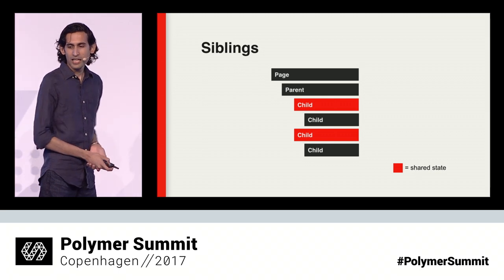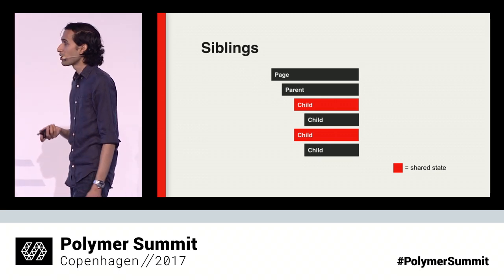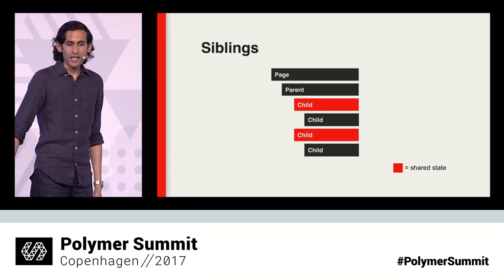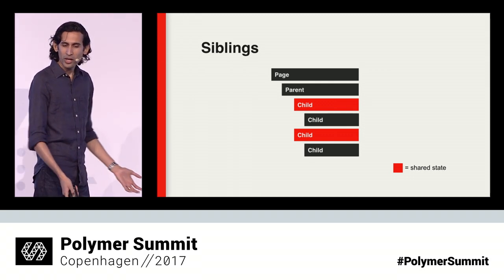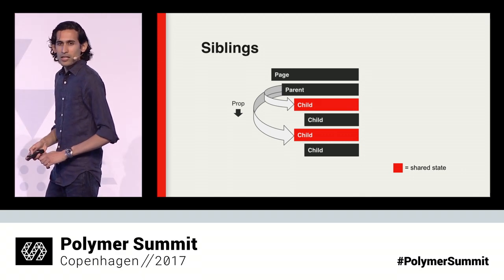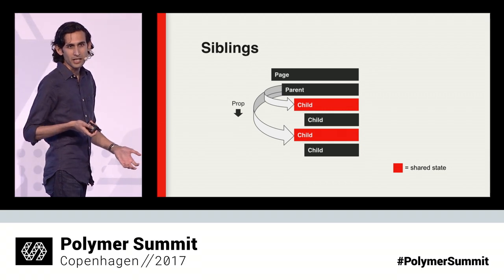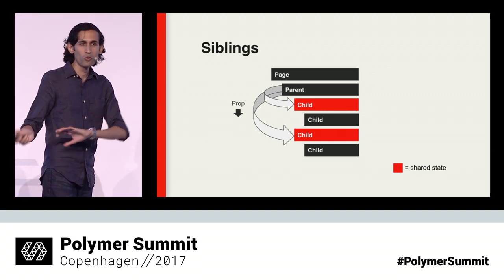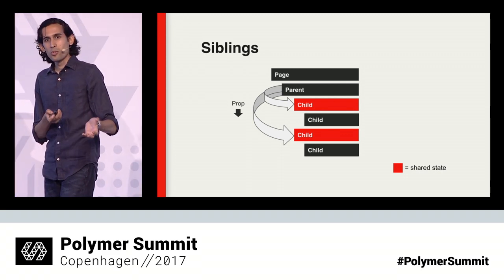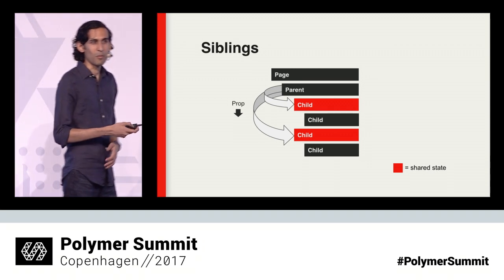Here's another situation: two sibling components that need to share a bit of common state. You'd have to find a common parent ancestor and store the state there, even though it doesn't actually do anything with that state besides passing it down. This also illustrates a potential problem when a refactor or design change causes one of these child components to move elsewhere in the visual hierarchy — you now have to find a new common parent and play the property-passing game all over again.